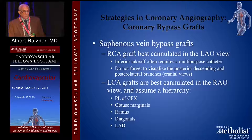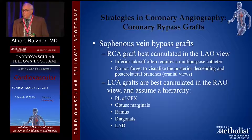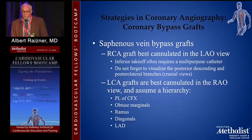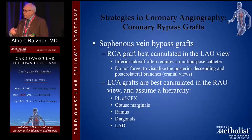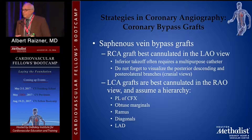For saphenous vein grafts, the right coronary artery graft is easily cannulated in an LAO view. Sometimes its takeoff is directly inferior and requires a multipurpose straight-tipped catheter for good visualization. Left coronary artery grafts are cannulated in the RAO view. In the RAO view, there is a hierarchy of grafts — a surgeon puts them in so that there's no overlapping or crisscrossing. So if somebody has five saphenous vein grafts and you identify one of them, you'd know where to look for the others.